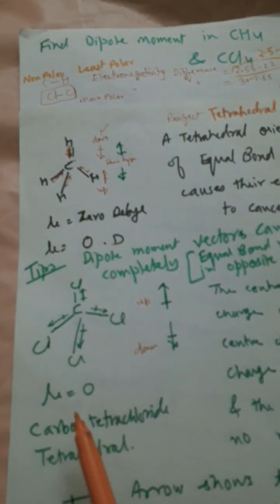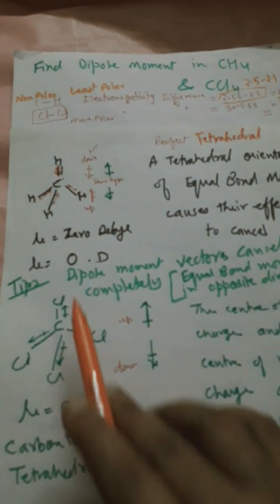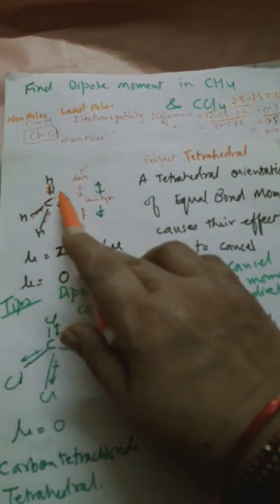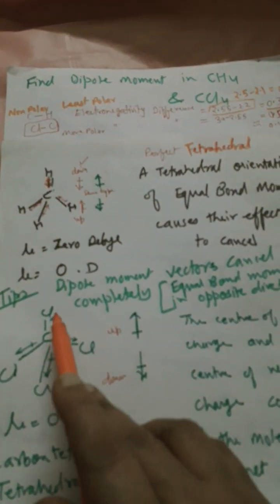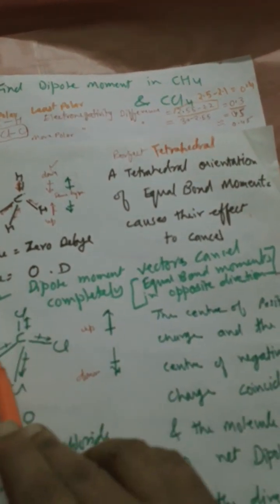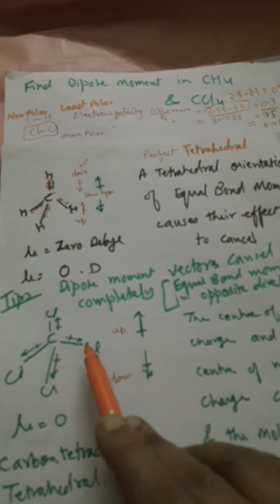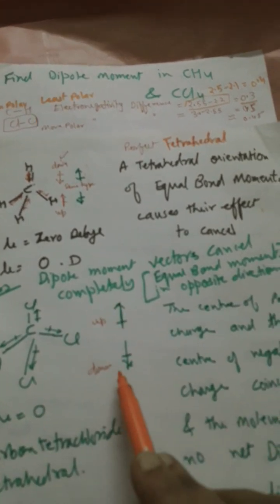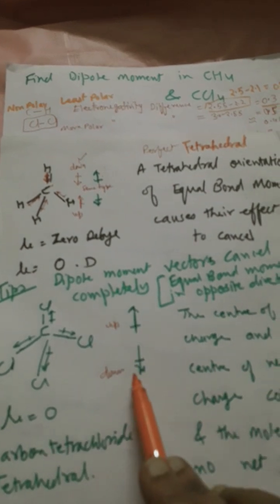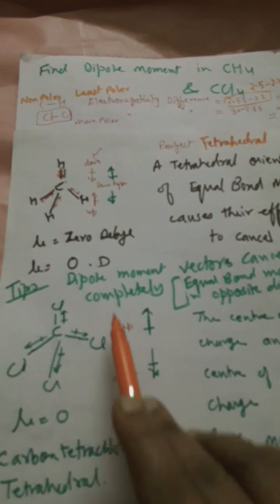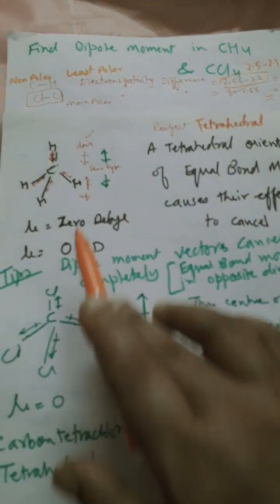Dipole moment in CH4 and CCl4 is 0. Mu is 0 because these dipoles are opposite to each other and the vector sum equals 0. One dipole goes upward, another goes downward, and they are opposite to each other, so the vector sum is 0. Both molecules are regular tetrahedrons.